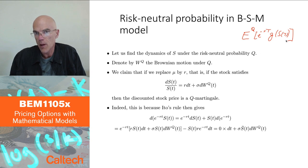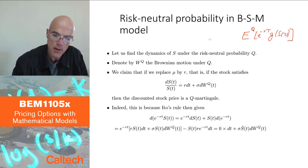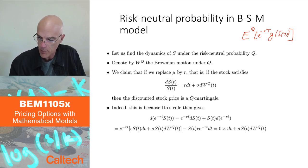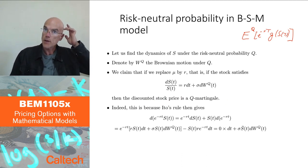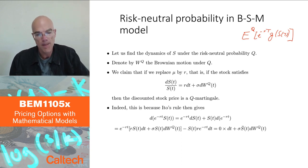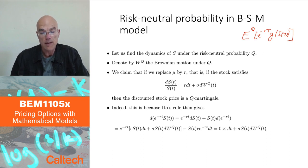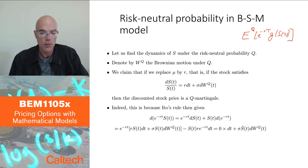This is what we want to compute in the Black-Scholes-Merton model, but we don't know yet what Q is. Q is a probability such that under Q the discounted stock price is a martingale. More precisely, what is important is that the discounted wealth process is a martingale. Let's try to find such a probability in the BSM model, and see whether there is only one, or more, or any.